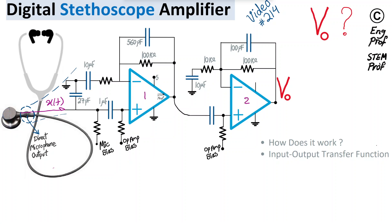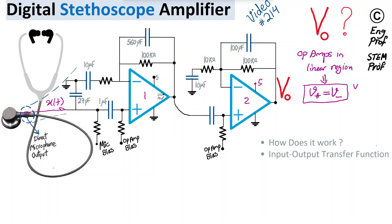We have op-amp 1 and op-amp 2. The assumption is we have the right voltage connections — for example, in a single-supply design, one side of the op-amp is grounded and the other is connected to 5V for both op-amps. We assume both op-amps are in the linear region of operation, properly biased, not saturated. As a result, the virtual short is valid, meaning the positive input terminal has the same voltage as the negative input terminal, enforced by negative feedback.